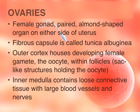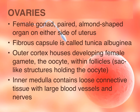The ovaries are the primary female gonad, equivalent to the testes in the male. They are almond-shaped, paired, and located on either side of the uterus, suspended by various ligaments. The outer capsule is called the tunica albuginea. The outer portion of the ovaries is called the cortex, which houses the oocyte surrounded by a structure called the follicle. The inner medulla contains loose connective tissue and large blood supplies and nerves to nourish the developing oocyte.